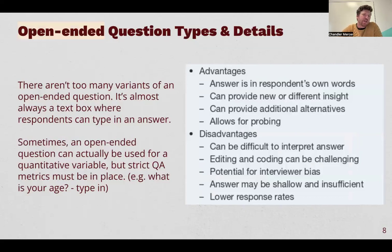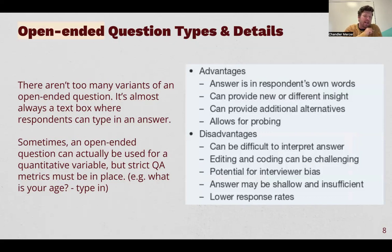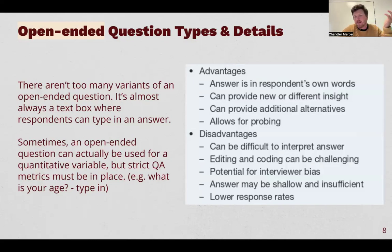Open-ended questions are those qualitative-based type-in questions. There's not very many variations of them — it's mainly text boxes with a question related to the topic. However, a text box can actually be a quantifiable ratio-level variable. If I want to say how old are you and you type in 26, or how many pizzas have you eaten in the last month and someone types three — that's ratio-level scale data. It's when they start actually typing in text that it turns into an open-ended qualitative type.